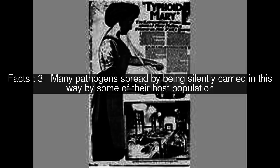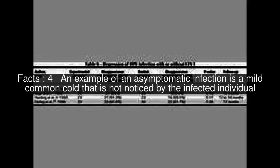Many pathogens spread by being silently carried in this way by some of their host population. An example of an asymptomatic infection is a mild common cold that is not noticed by the infected individual. Since subclinical infections often occur without eventual overt signs, their existence is only identified by microbiological culture or DNA techniques such as polymerase chain reaction.